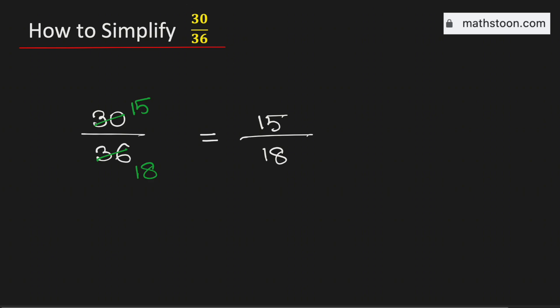Now see that both the numbers are divisible by 3. If we divide 15 by 3 we get 5, and if we divide 18 by 3 we get 6.